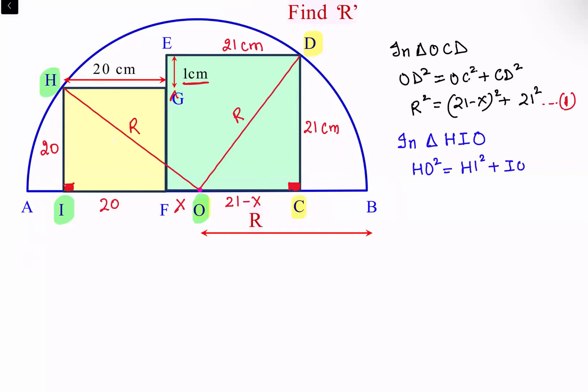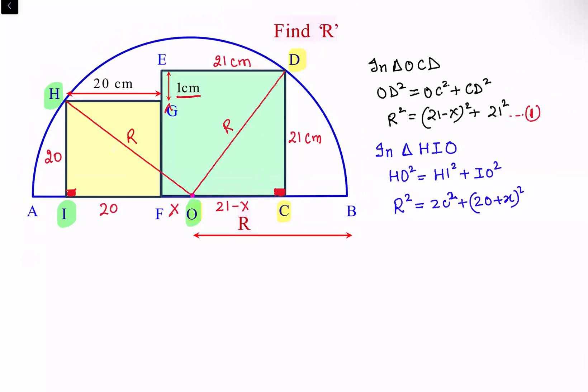So H I square plus I O square, putting the values: O H is radius R, R square is 20 square plus 20 plus X, I O is 20 plus X square. So let's open this. And this is our observation number two.